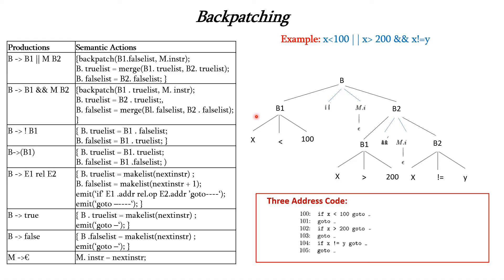Applying bottom-up parsing, we start from the leaf node x < 100, which is reduced to B1. The true list is makelist(nextinstr), so B.truelist = {100}. The false list is nextinstr+1, so B.falselist = {101}. Moving right, M.instruction stores the address of the next instruction; since 100 and 101 have been generated, M.instruction = 102.